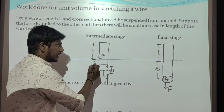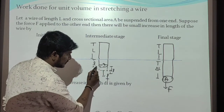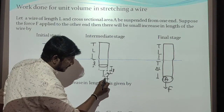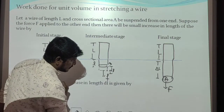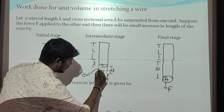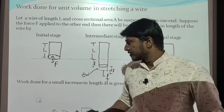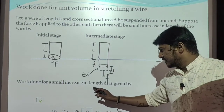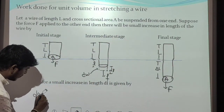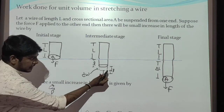What we have done: we have taken a wire with initial length L. At the intermediate stage the change in length is denoted by small l, and we apply a small amount of force f. After applying this force there is a small increase in length dL. A small amount of work is done to produce this small increase dL. The work done for small increase in length dL is simply: dW = F · dL.